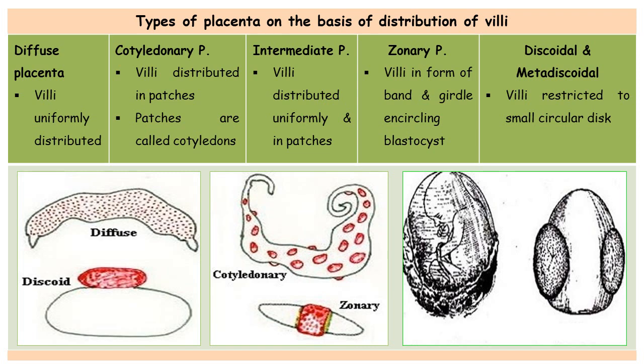The second type is cotyledonary placenta, where the villi are distributed in patches on the allantochorionic placenta. Both diffuse and cotyledonary types are forms of allantochorionic placenta, formed by two fetal extra-embryonic membranes: allantois and chorion. The patches of villi are called cotyledons, which are attached at specialized thick areas of the uterus called caruncles. Cotyledonary placenta is found in cattle, deer, and sheep. The figure shows patches of villi in round circle-like structures in the cotyledonary type.